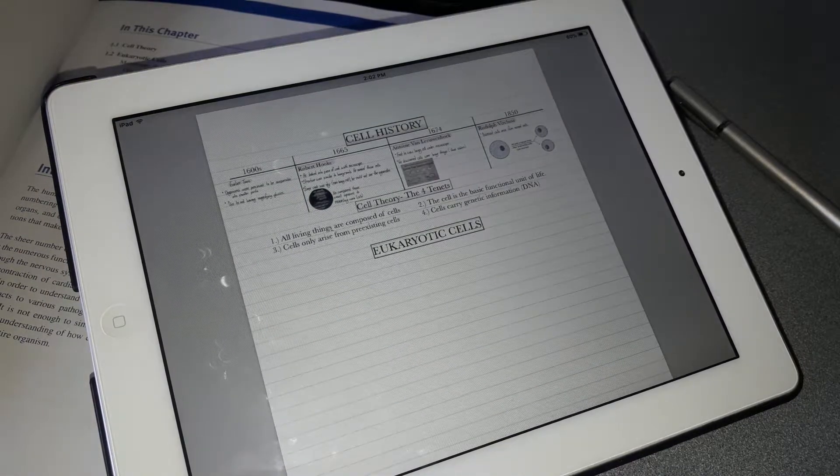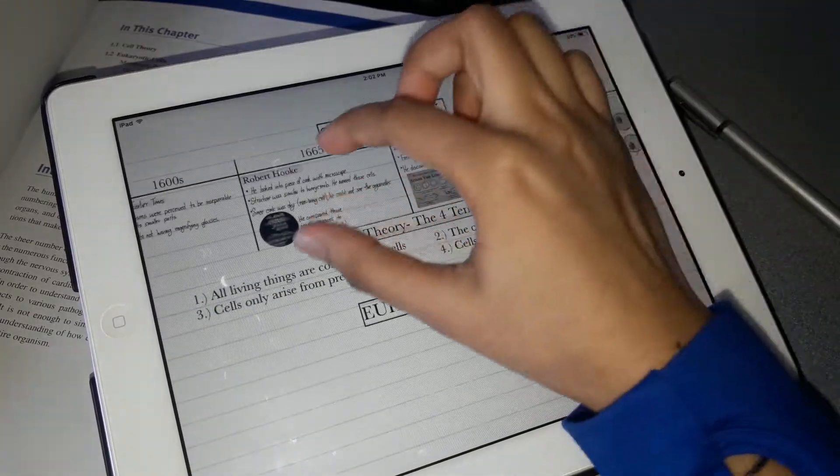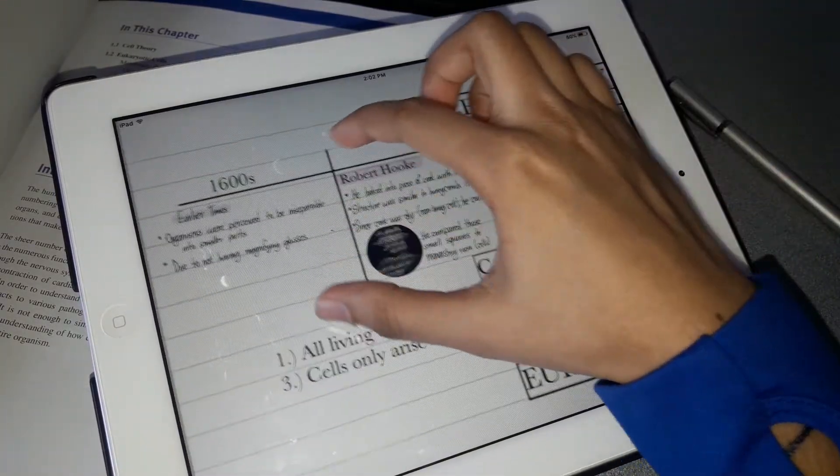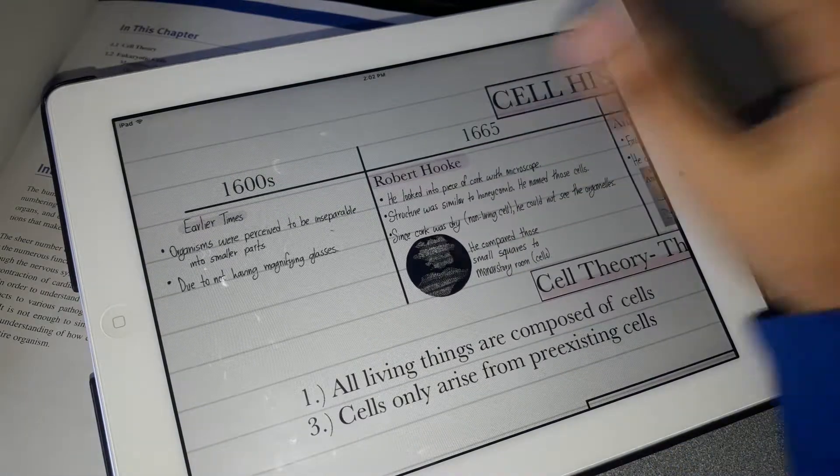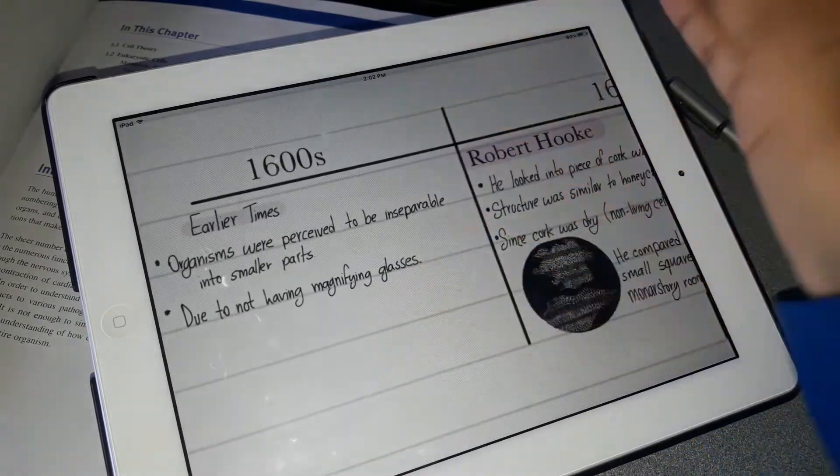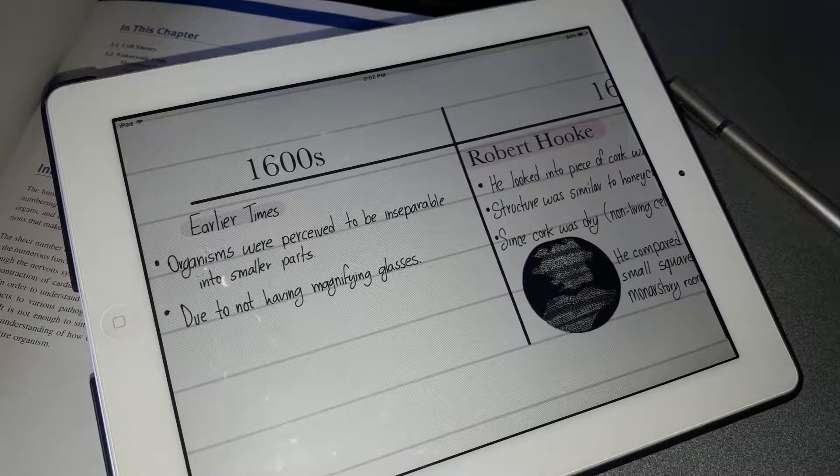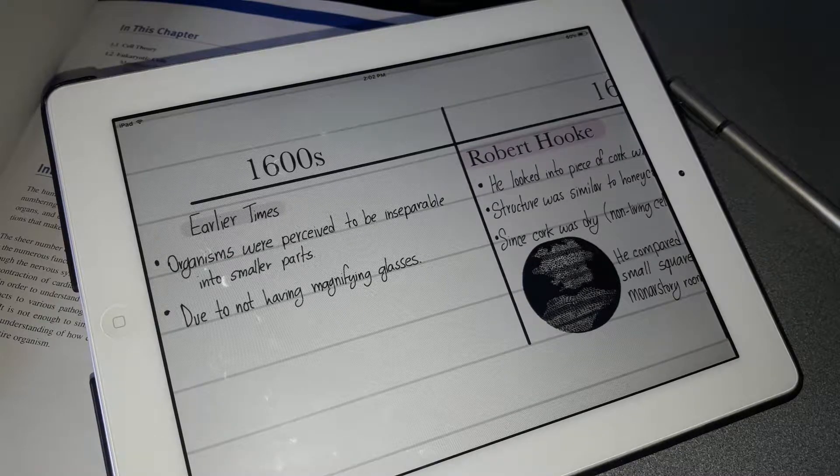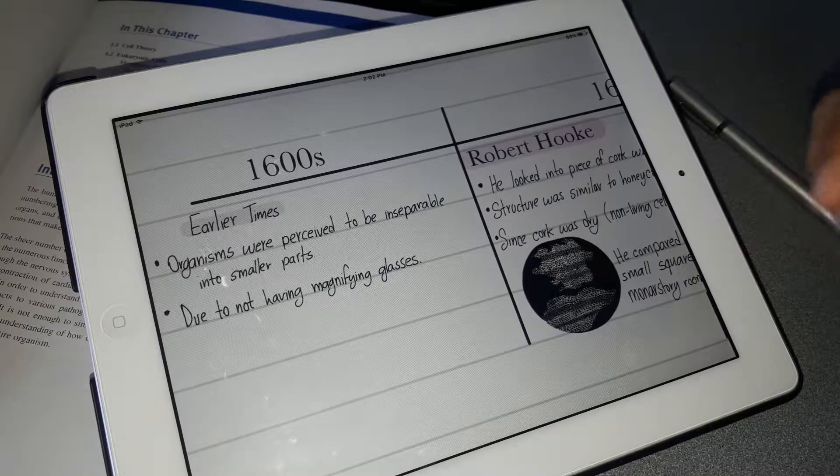The cell theory starts from the early 1600s. In earlier times, organisms were perceived to be inseparable into smaller parts because there were no magnifying glasses or microscopes to actually look into a living organism and see if there were cells that function differently depending on where they're located.